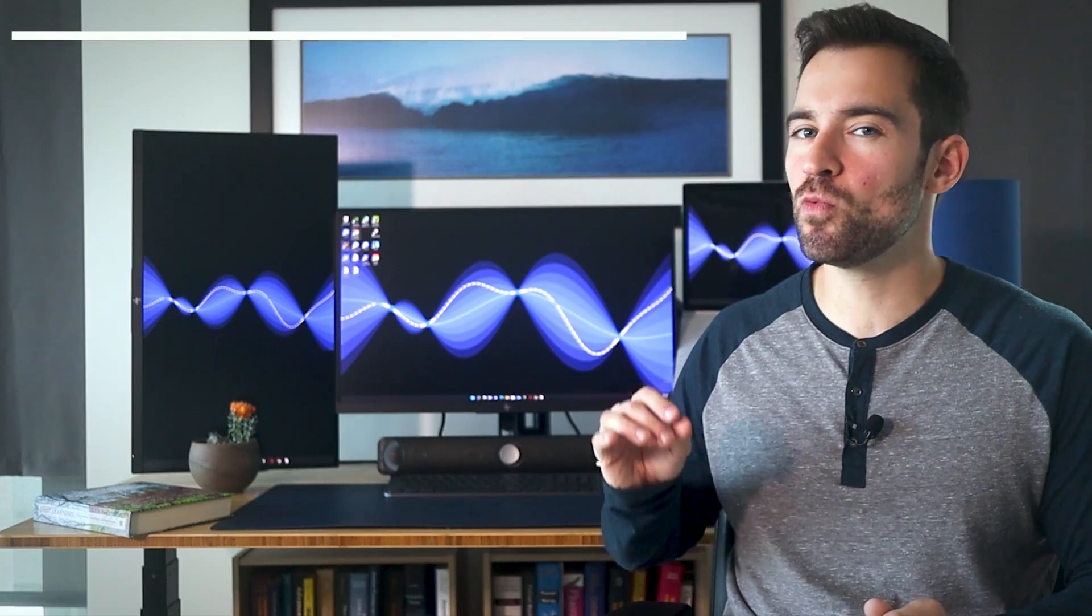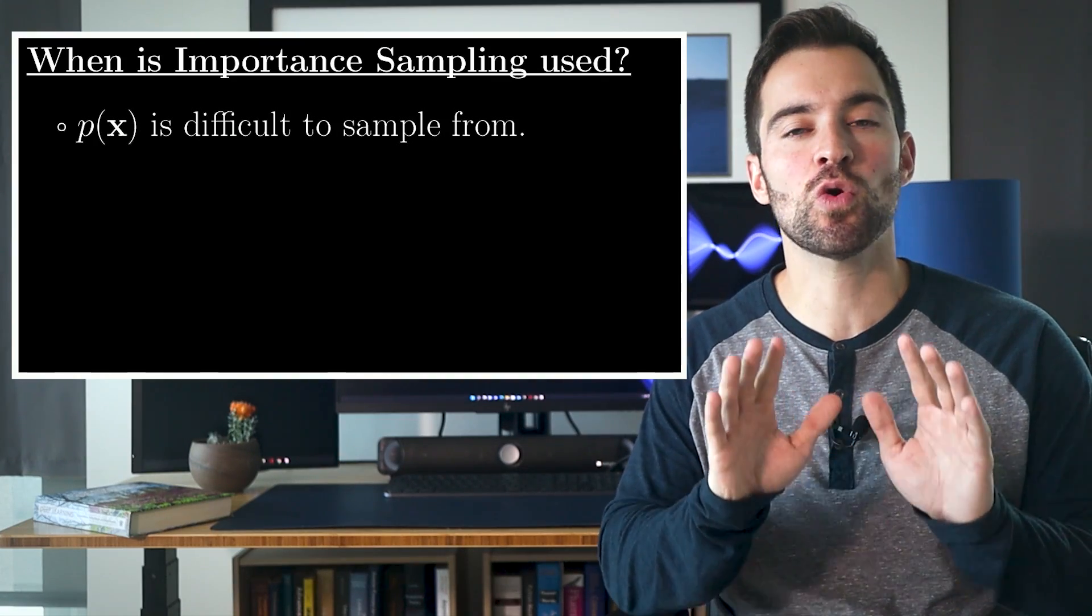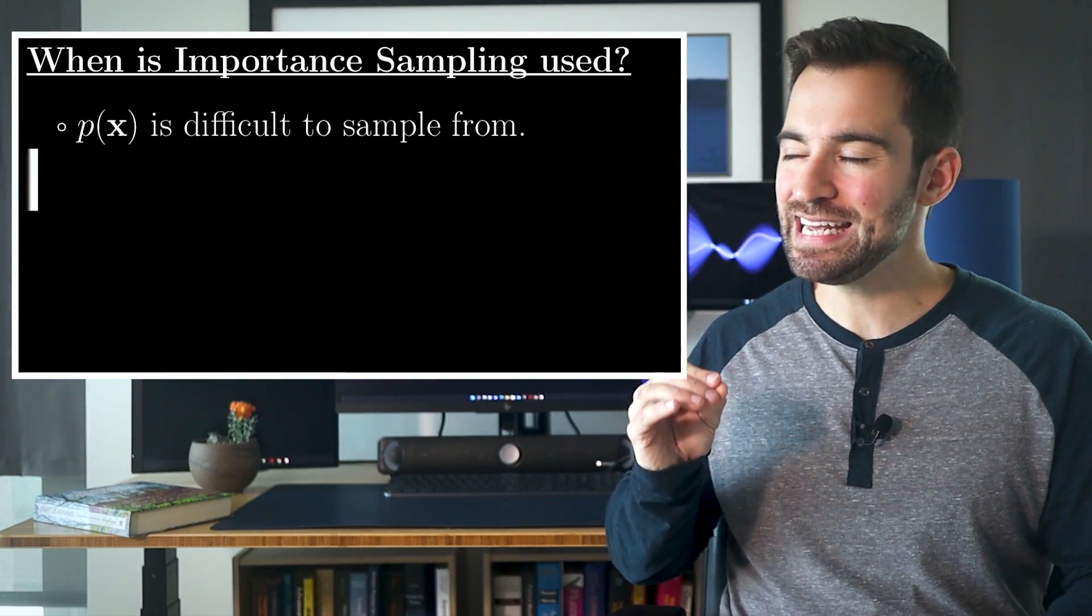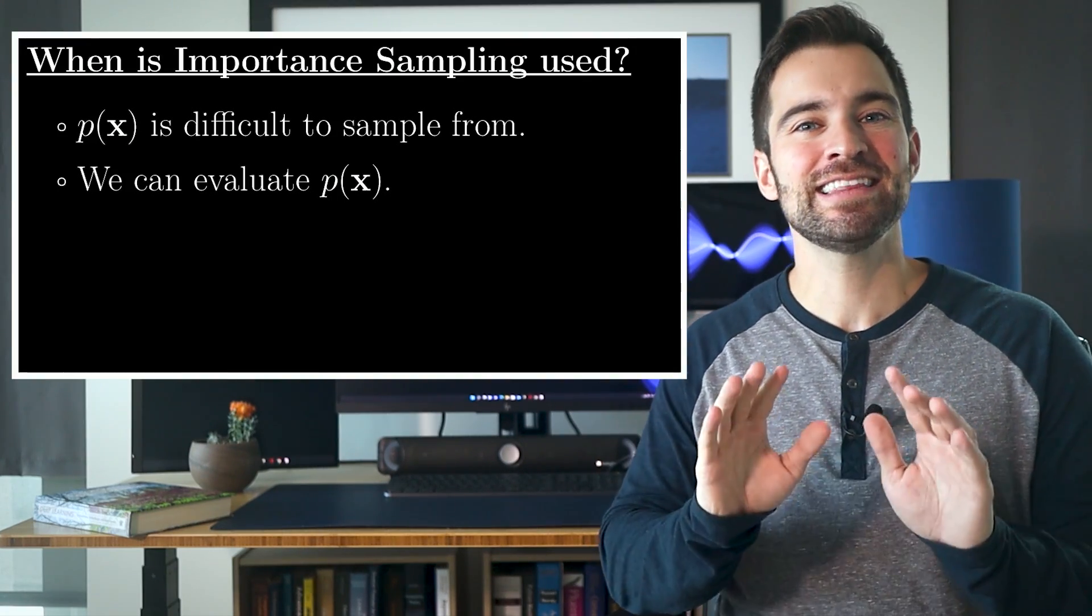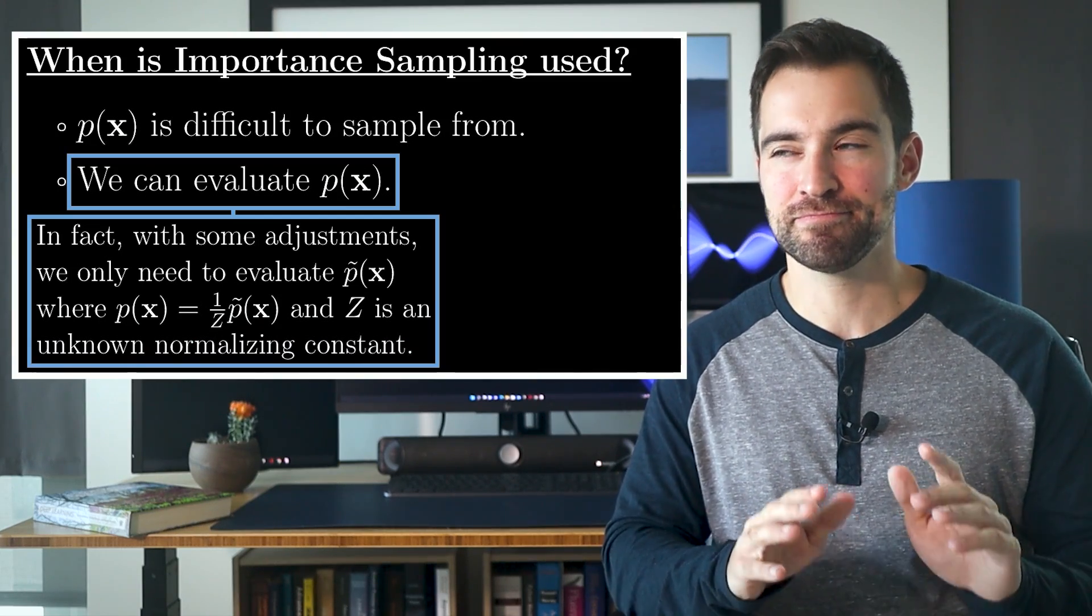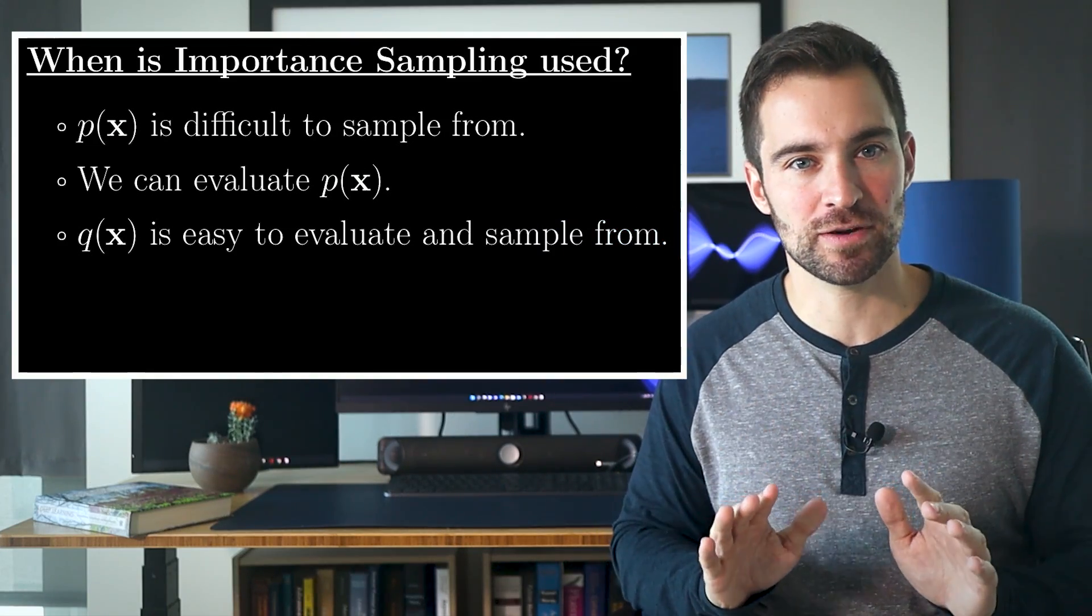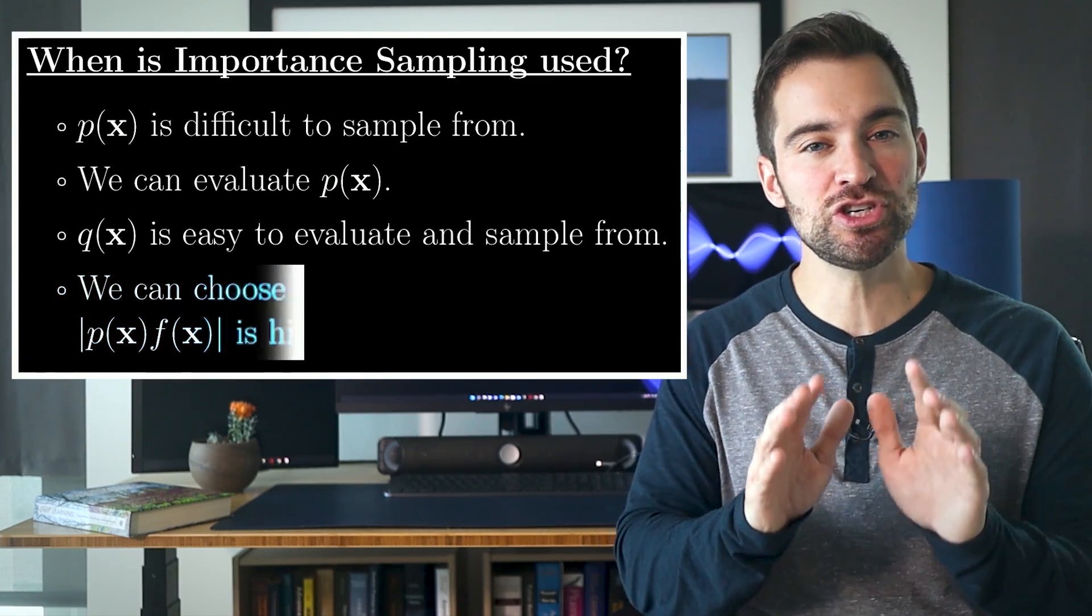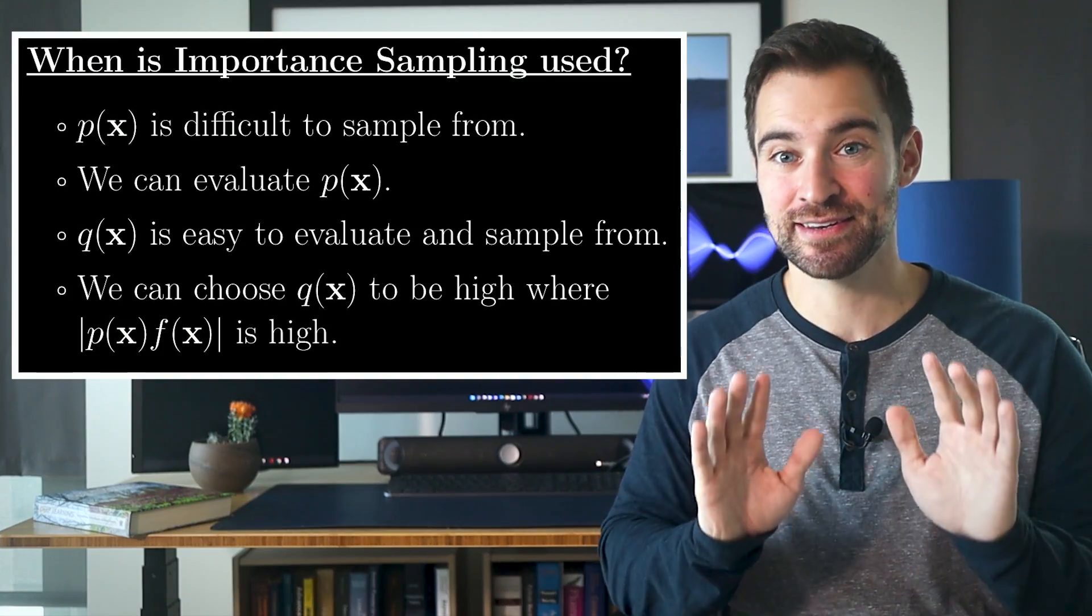Okay, to wrap up, I'd like to comment on when importance sampling is likely to be useful. First, it's useful when p is difficult or impossible to sample from. I know I didn't cover that as a motivation, but it's certainly one of them. Second, we need to be able to evaluate p(x), meaning we can plug in an x and get a value. In fact, that's a little more than we need. We actually only need the ability to compute an unnormalized density, but we'd have to tweak our procedure a bit. See my sources if you're curious. Next, q(x) needs to be easy to evaluate and sample from, since our estimate will ideally be made of many samples from it. And lastly, and this is the hard part, you need to be able to choose q(x) to be high where the absolute value of p(x) times f(x) is high, which is not necessarily an easy task. Good luck.